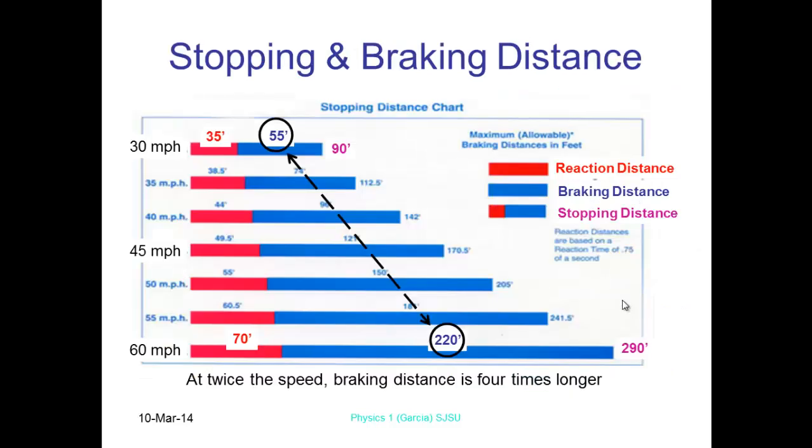So in the example of a car going, you're going to have some work that's done by the brakes. So obviously at twice the speed, the braking distance is four times as long, because remember the kinetic energy is V squared, so therefore that's going to change things.